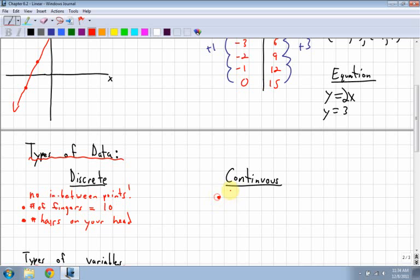Continuous data could be height, could be your weight, because these values, there's lots of in-between, lots of variation. I could say, oh I'm 5 foot 10 and 3 quarters. Somebody else might say they're 5 foot 11 and a half. Somebody else might say they're 5 foot 6 and 2 thirds. So there's a lot of variation when you're dealing with height. Weight, the same thing. You could say you're 122.356 pounds. You could say you're 180.32 pounds. So a lot of variation. You can go to lots of different decimal places.